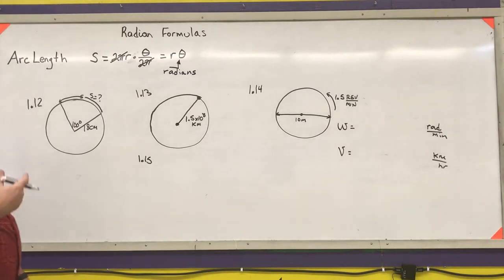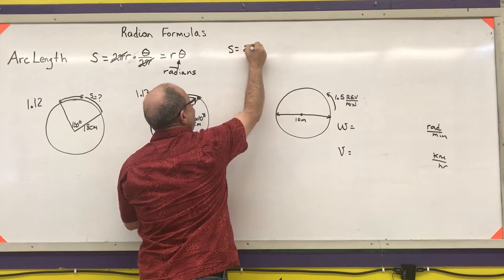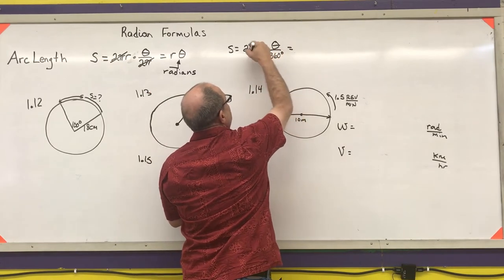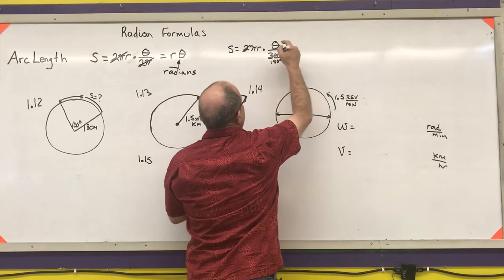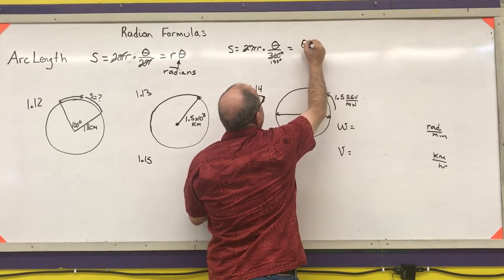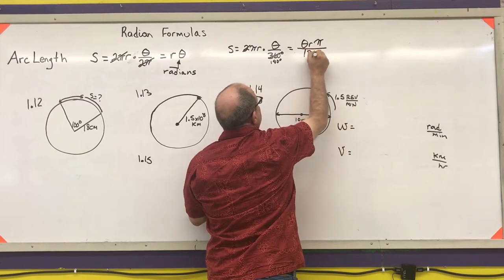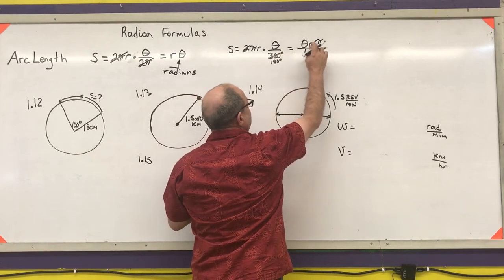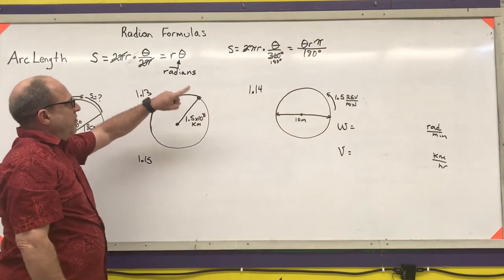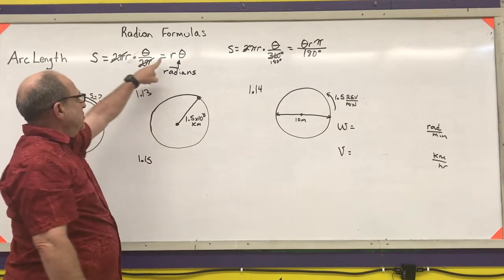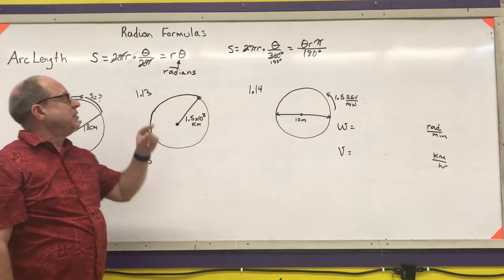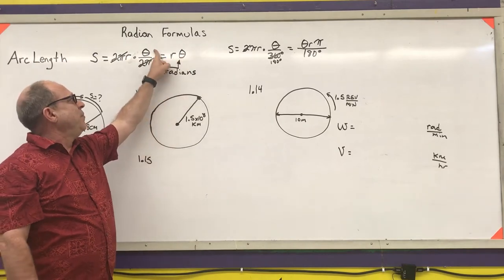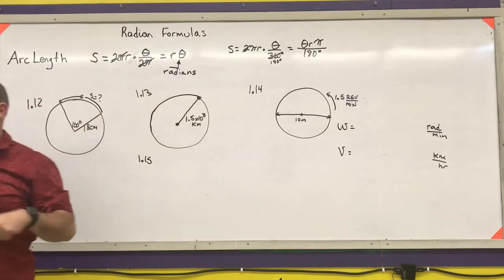You could do the same thing in degrees: S equals 2πr times the angle in degrees over 360. The 2 cancels to give 180, so it becomes S equals θ times r times π over 180 degrees. I would memorize the radian formula S equals rθ. Both formulas come from circumference times a fraction — your angle measurement divided by one full revolution. If you forget the formulas, just remember: circumference times a fraction.